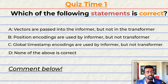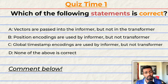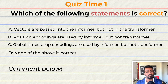B: position encodings are used by the informer, but in the transformer, they are not. C: global timestamp encodings are used by the informer, but in the transformer, they are not. Or D: none of the above is correct.